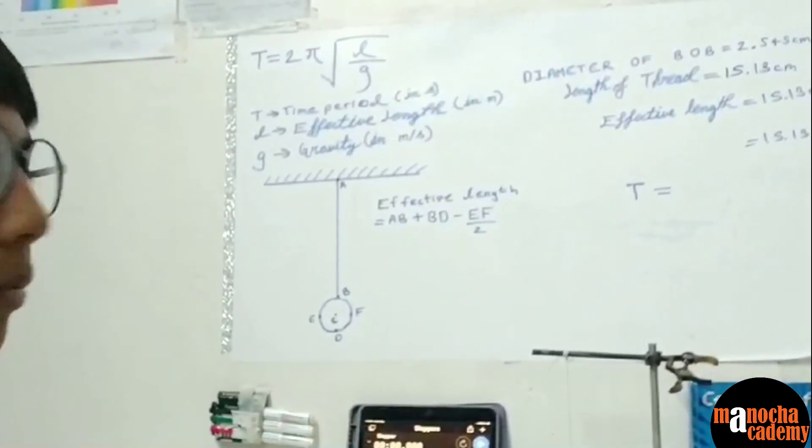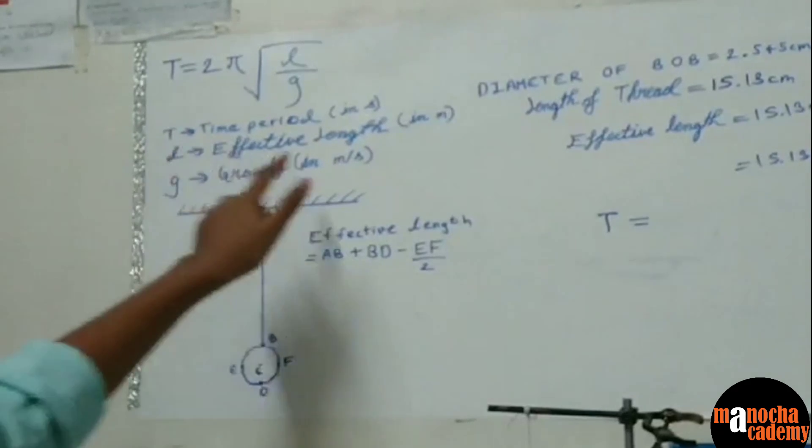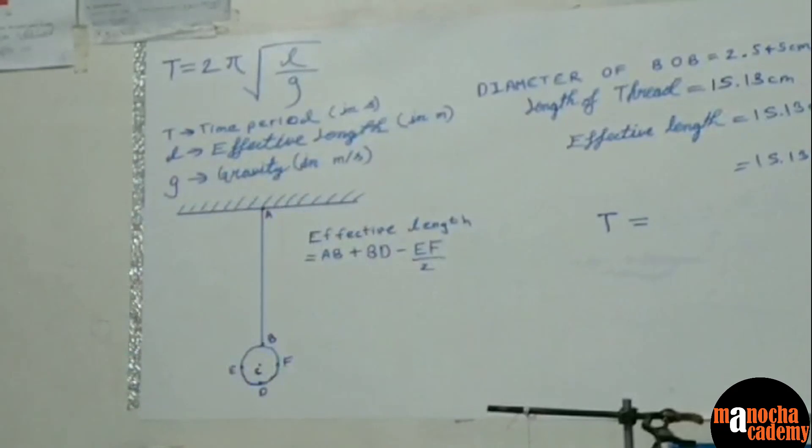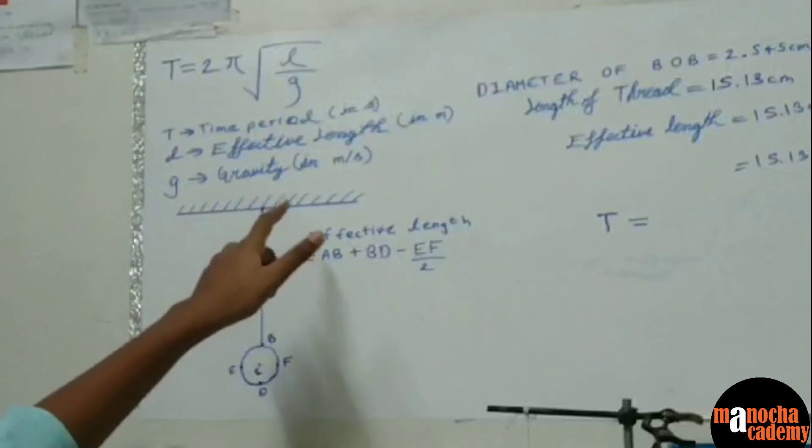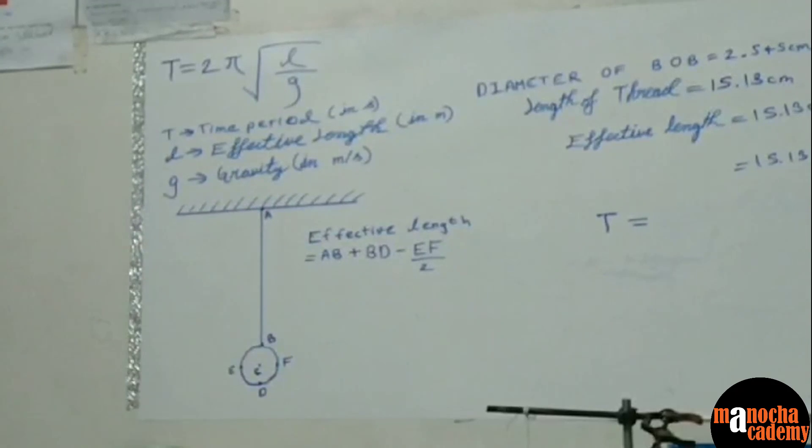we can substitute both these values in the formula T is equal to 2π√(L/g), where T is the time period in seconds, L is the effective length in meters, and g is the gravity in meter per second squared. g is the constant that we need to find.